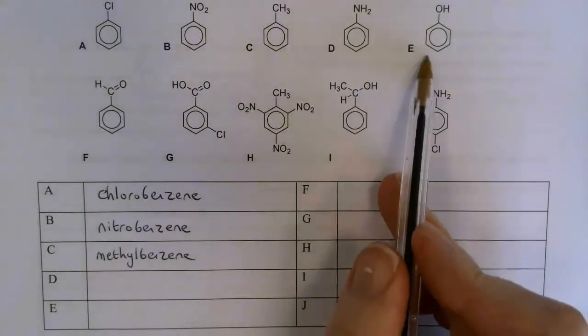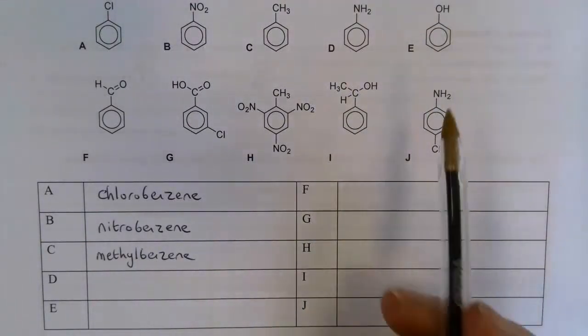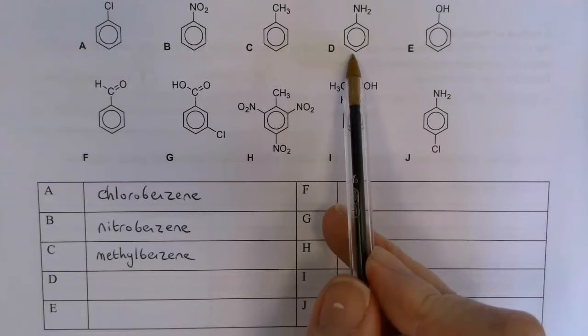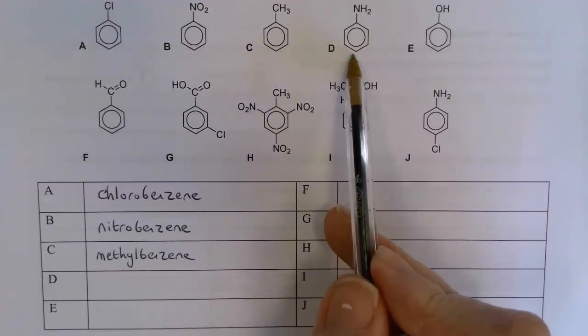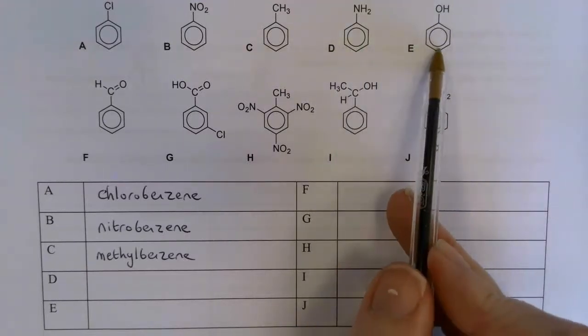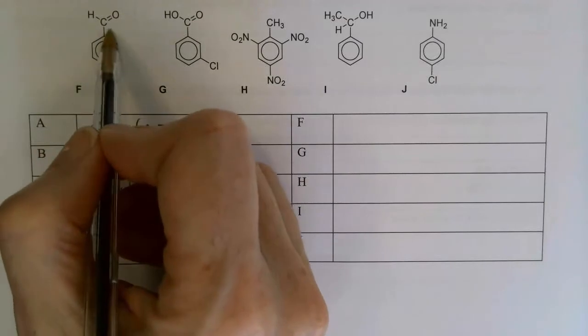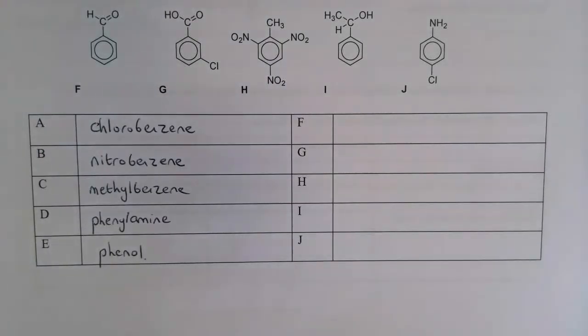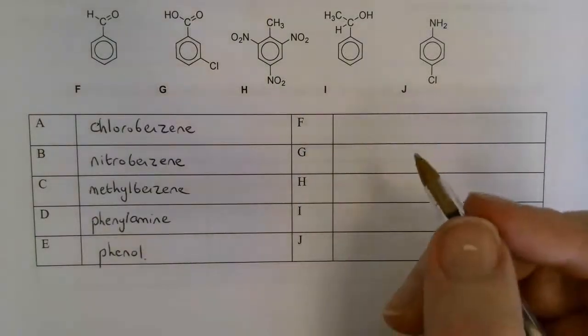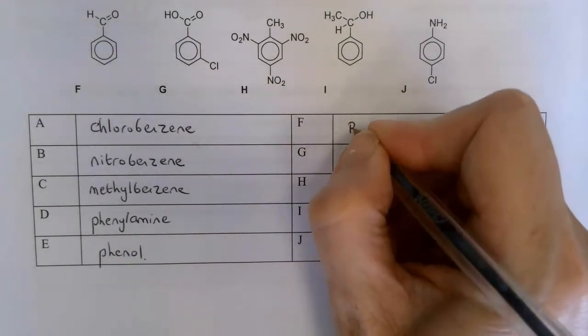If that had two carbons on it it would be ethylbenzene and so on. D and E I put there just to catch you out a little bit because those are the ones you've got to learn, but we've come across those before. This is phenylamine and this is phenol. And as I said there are some you are going to have to just learn. F might catch you out a bit because this is an aldehyde functional group, so F is actually called benzaldehyde.